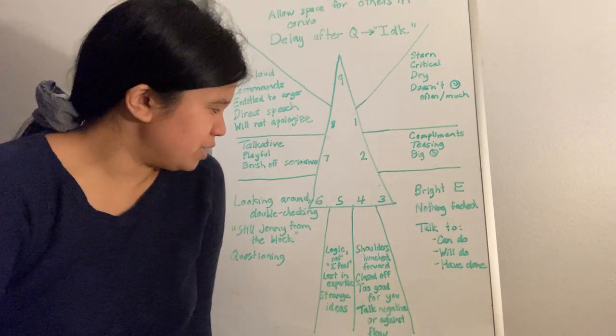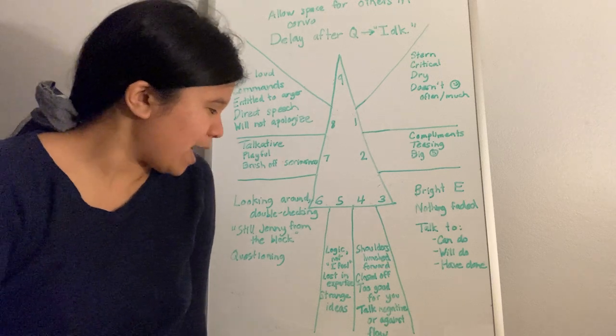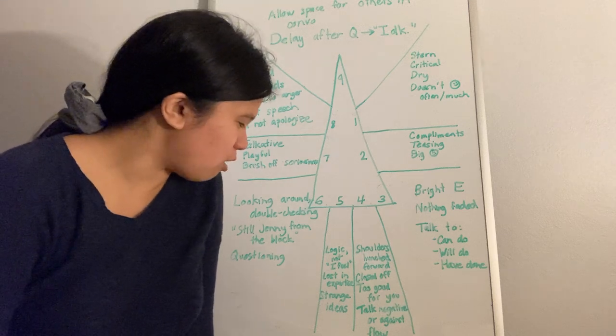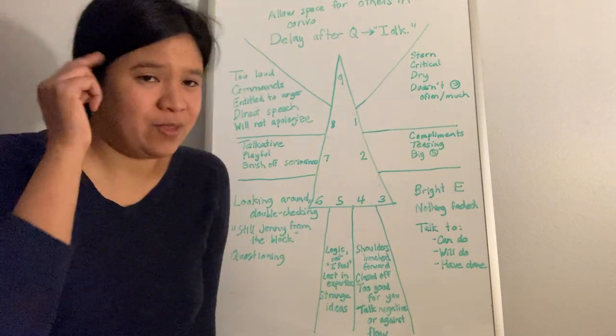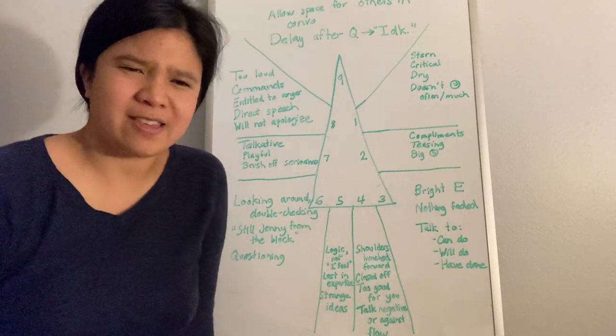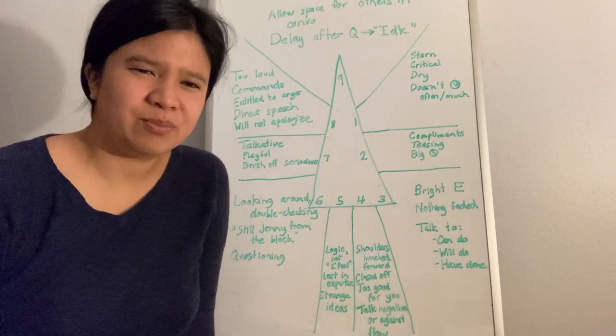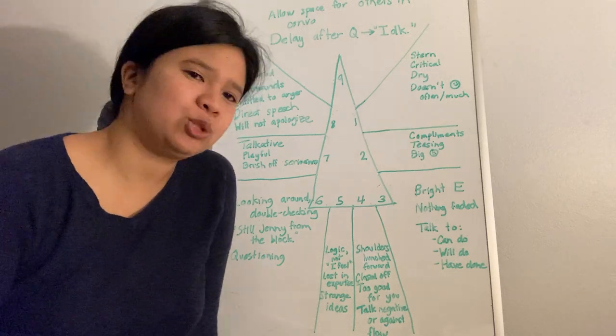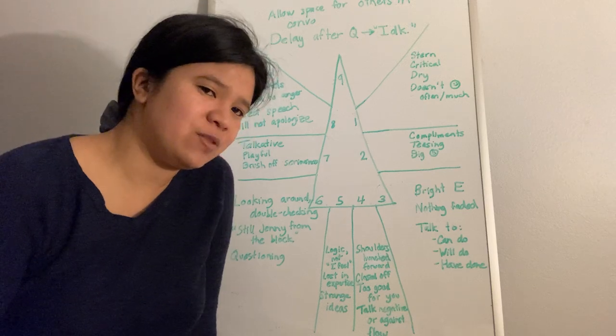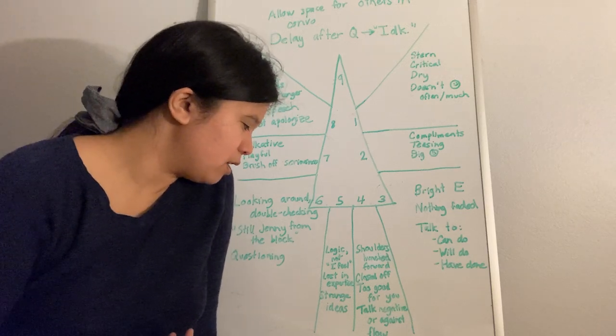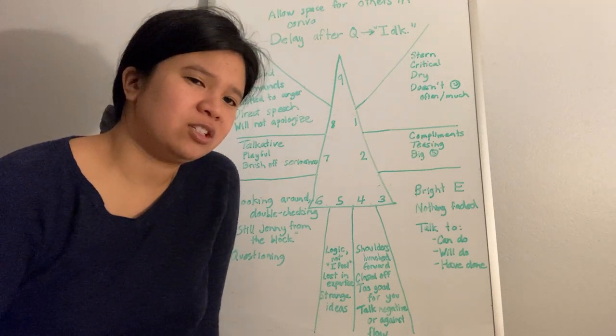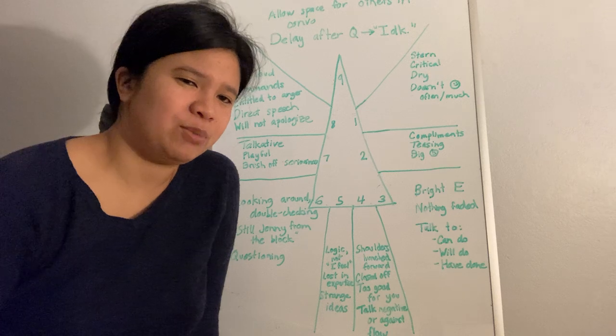Moving on to the head triad, we have our type 5s within my tri-type. 5s are in the head, speaking from logic and not saying things like I feel, but rather I think, intellectualizing their emotions. 5s are lost in their world of personal expertise, in their world of strange ideas that are not common within the population.